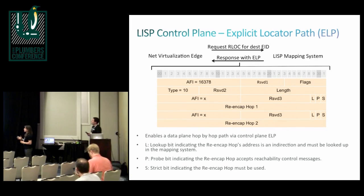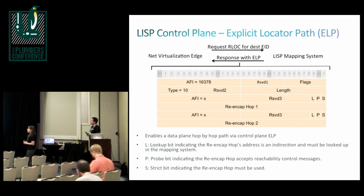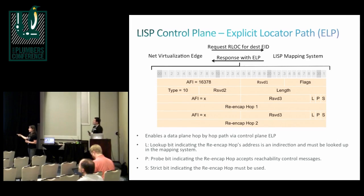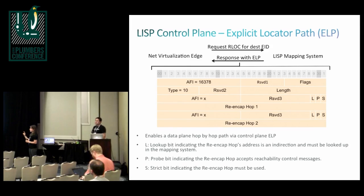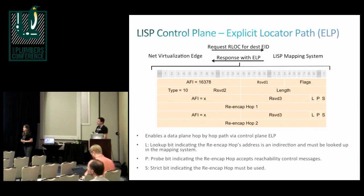This may not apply in enclosed data center environments, but LISP has a reachability protocol where on the data plane you can determine if the next hop is actually reachable. If the strict bit is not set - meaning you have an optional service or re-encapsulation hop - it's better to pass through it, but if it wasn't reachable we still want to use a different path to the next one.